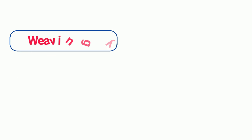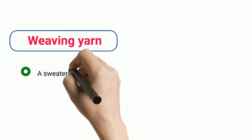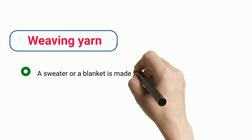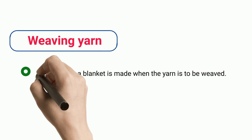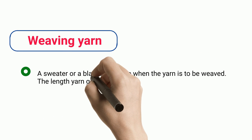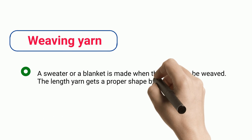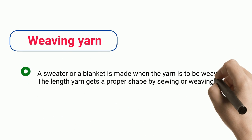Weaving yarn: a sweater or a blanket is made when yarn is weaved. The length of yarn gets a proper shape by sewing or weaving.